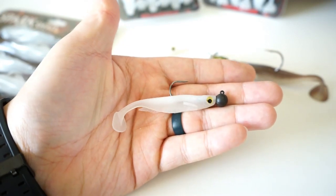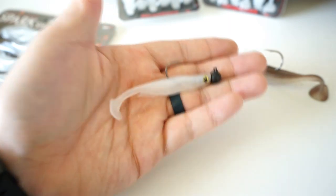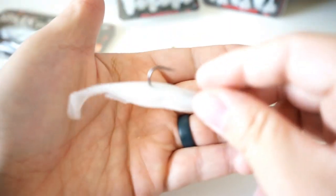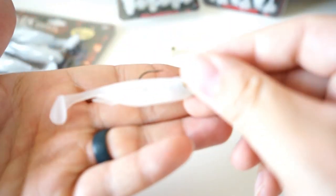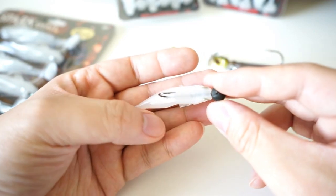All you do is get a quarter-ounce or eighth-ounce ball head jig and just rig it straight through, and you're all good to go. No modifications needed. This is a bait where you can just take it out of the package, rig it up, and you're good to go.